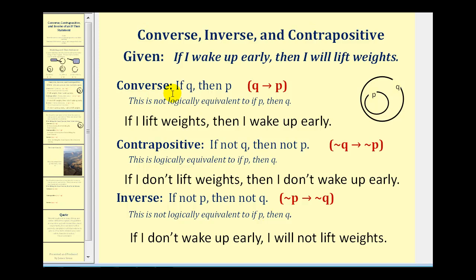So for the converse, if-Q-then-P, we interchange the hypothesis and conclusion. So we'd have: if I lift weights, then I wake up early. Looking at the Venn diagram, if I lift weights means I'm inside set Q, then I wake up early means I'm inside set P. So just because I'm inside Q doesn't guarantee that I'm inside P, therefore this is not logically equivalent to if-P-then-Q, which means it may be true or it may be false.